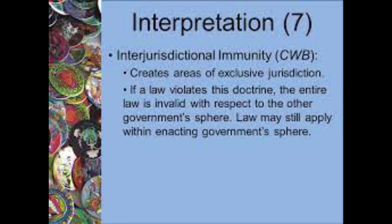Next, we have the Inter-Jurisdictional Immunity Doctrine. This is a concept used in situations where a generally worded law is clearly valid in most of its applications, but in some of its applications it arguably overreaches, affecting a matter falling within a core area of the other level of government's jurisdiction. When inter-jurisdictional immunity is invoked, the court will read down the provincial or federal statute to protect the core of exclusive federal or provincial powers from encroachment. Reading down is a technique of interpretation used to save statutes from constitutional challenges — words are interpreted to apply only to matters within the jurisdiction of the enacting body. This technically can be used for both federal and provincial legislation, but to date has been used only on federal.